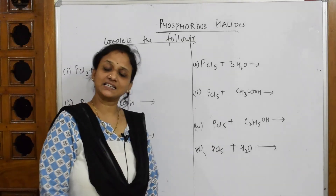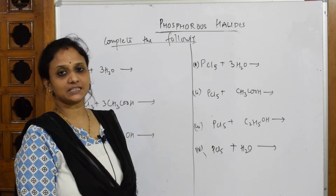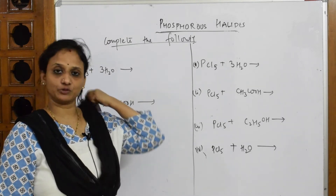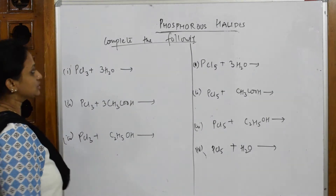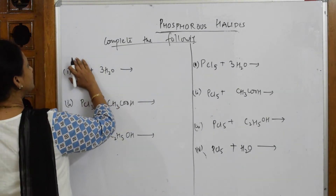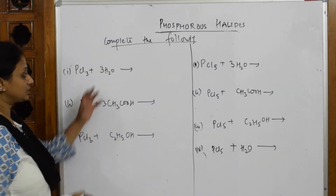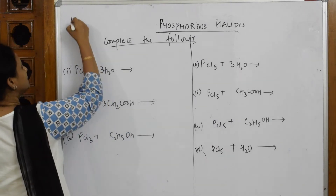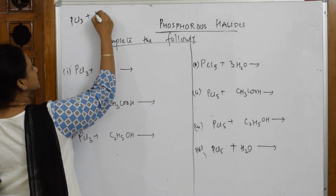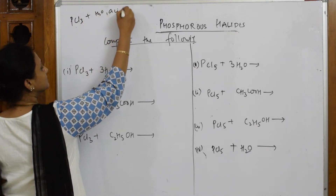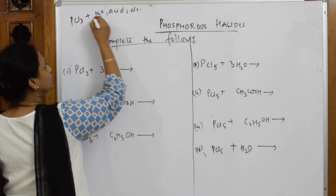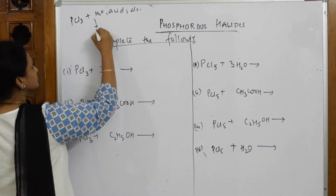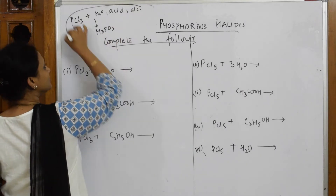Let us come back and see the next reactions of PCl₃ and PCl₅. One important logic to remember: whenever PCl₃ is treated with either water, acid, or alcohol, you are going to get one common product — phosphorous acid (H₃PO₃) — as a compulsory product.